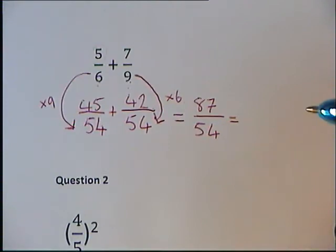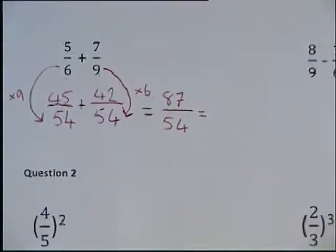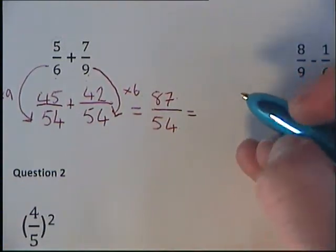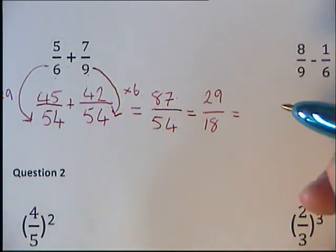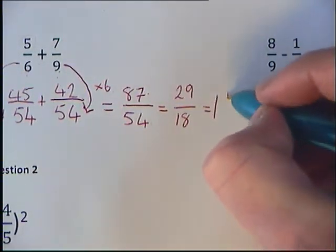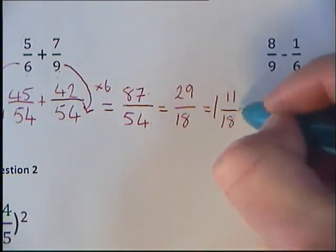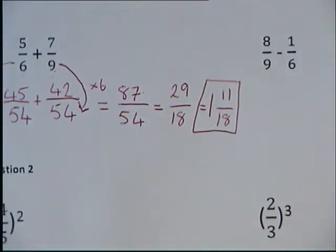And if we simplify that down, we could divide 87 and 54 by 3, which will give us 29 over 18. Then we could turn that into a mixed number, so we get 1 and 11/18. 11 is a prime number, so we can't simplify that down anymore.